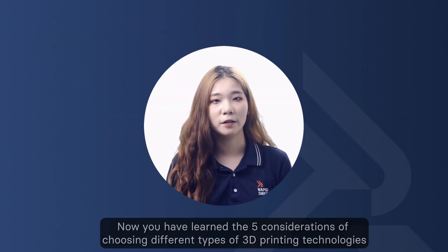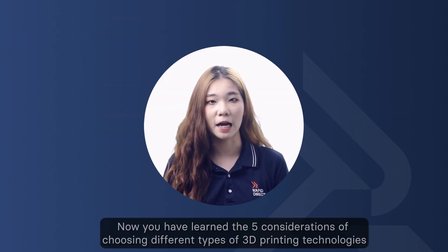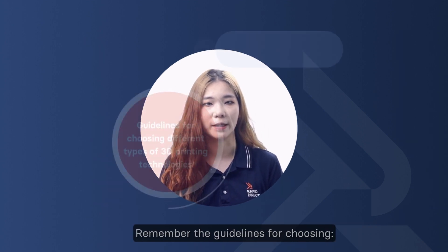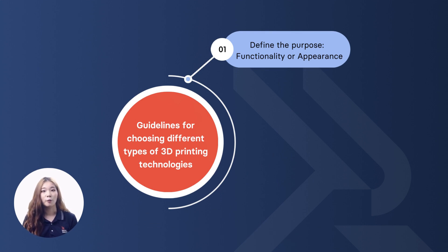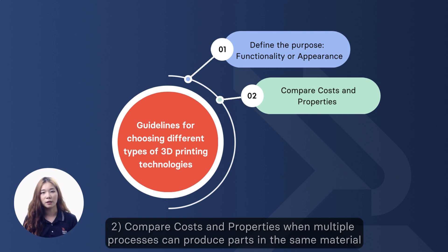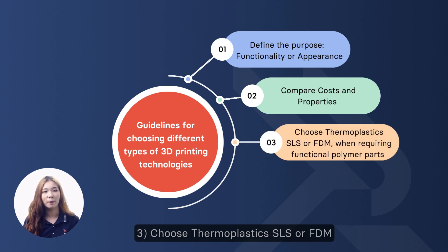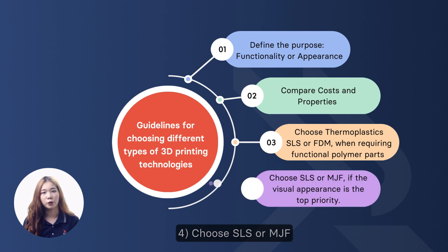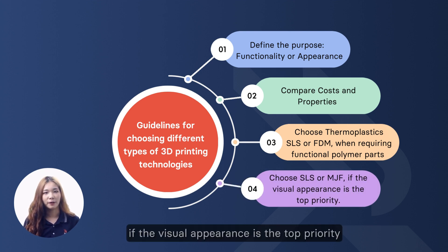Now you have learned the 5 considerations for choosing different types of 3D printing technologies. Remember the guidelines for choosing: 1. Define the purpose — whether you require functionality or appearance. 2. Compare costs and properties when multiple processes can produce parts in the same material. 3. Choose thermoplastics — SLS or FDM — if you require functional polymer parts. 4. Choose SLS or MJF if visual appearance is the top priority.